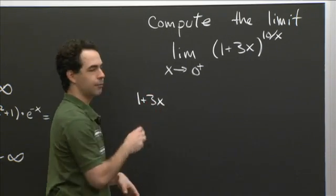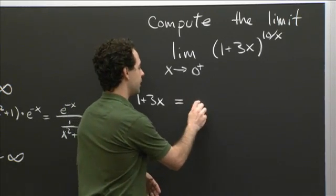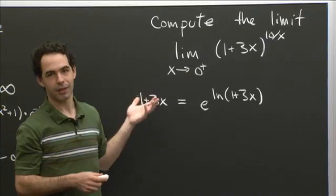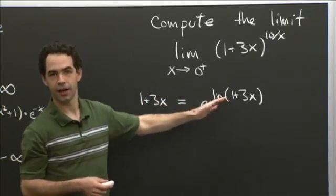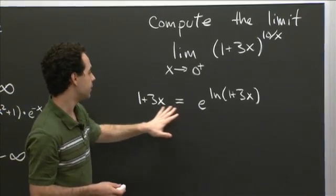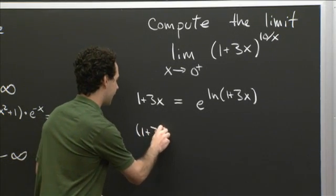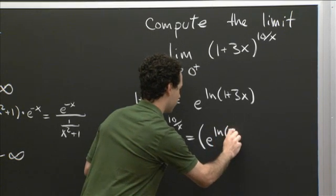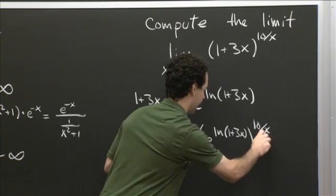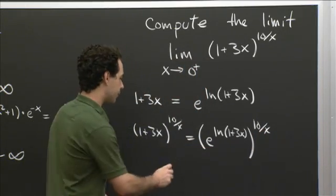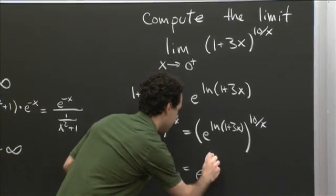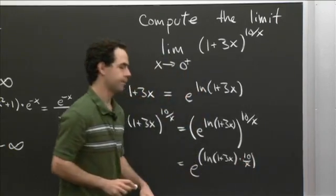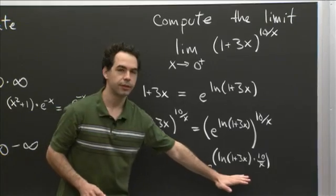In particular, we have that 1 plus 3x, if we want to write this in exponential form, is equal to e to the ln of (1 plus 3x). This is true of any positive number — any positive number is e to the ln of it, because e and log are inverse functions. So that means (1 plus 3x) to the 10 over x is equal to e to the ln of (1 plus 3x) to the 10 over x, and using exponent rules, this equals e to the ln of (1 plus 3x) times 10 over x.